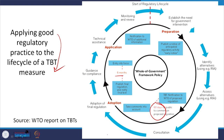Similarly, SPS measures were also checked. Figures were collected for 2017, estimates of SPS were made, then India's implications on SPS measures and issues related to transparency. A special case study was given on cinnamon exports from Sri Lanka, where we emphasized how the SPS committee was able to solve the problems for Sri Lanka's exports of cinnamon to European countries.